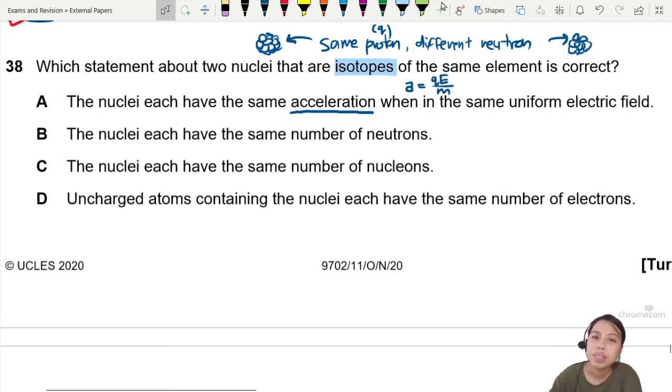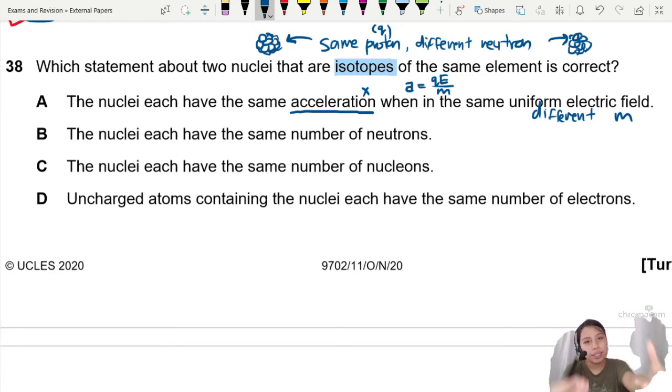Different mass. Same acceleration? No. Why? Because they have different mass. So, they will not have the same acceleration when they enter an electric field.